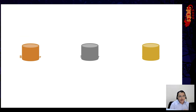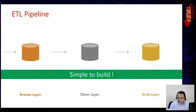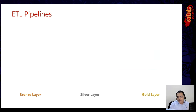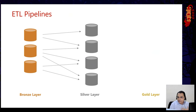Now think about building an ETL pipeline for this architecture — ingest to bronze, bronze to silver, silver to gold. Actually, it's not that simple. We're not working with a single entity; we have hundreds of entities like customers, sales, orders, and more. It's never a one-to-one mapping — you might extract customer and accounts data and combine them in the silver layer. There are lots of dependencies and complexity involved between multiple layers.